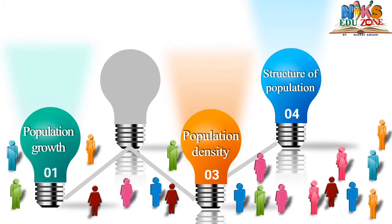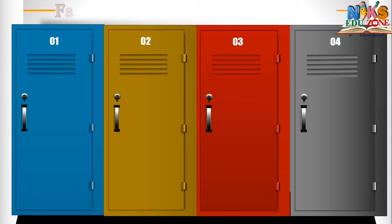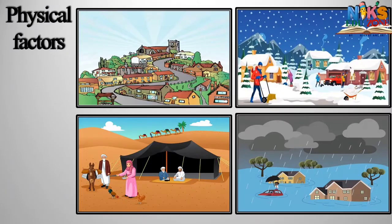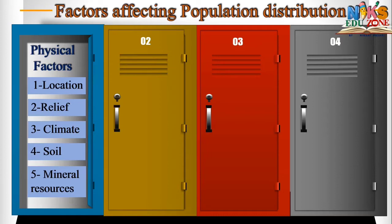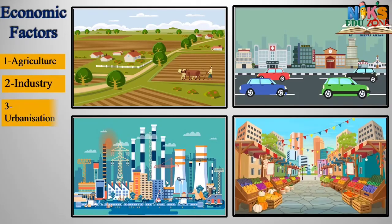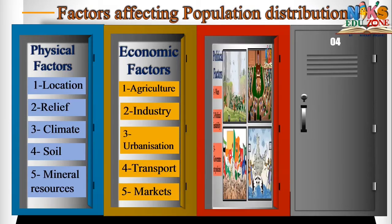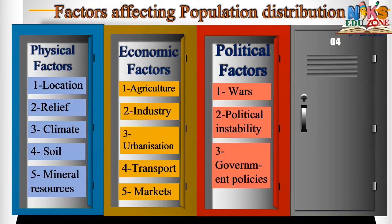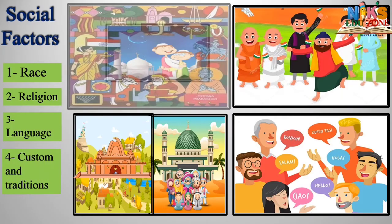Distribution of population refers to how the population of an area is spread across a region. There are mainly four factors which affect population distribution. Physical factors include location, relief, climate, soil, and mineral resources. Economic factors include agriculture, industry, urbanization, transport, and markets. Political factors include wars, political instability, and government policies. Social factors include race, religion, language, customs, and traditions.